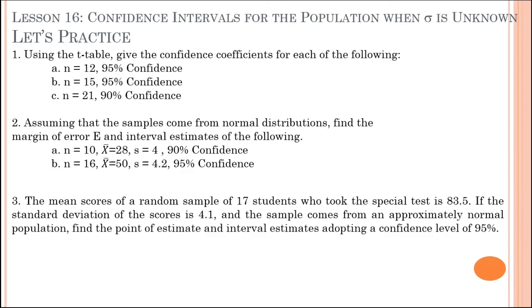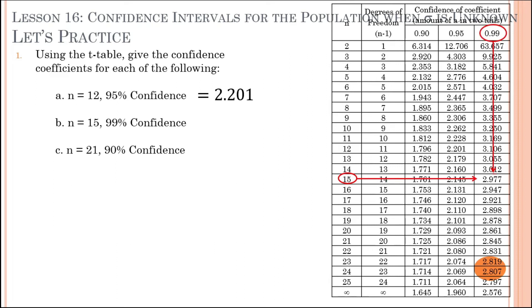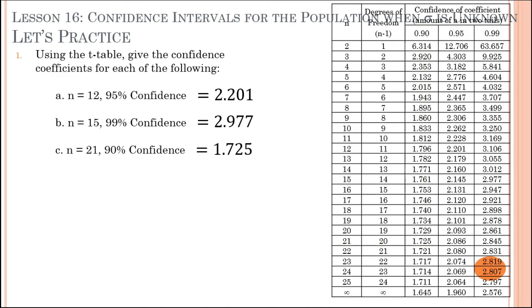Let's check the answers. For Part 1: at n equals 12 and 95% confidence, the t-value is 2.201. For letter B, n equals 15 and 99% confidence, the t-value is 2.977. For letter C, n equals 21 and 90% confidence, the t-value is 1.725.